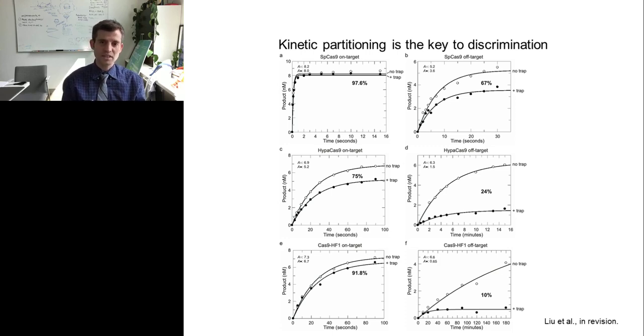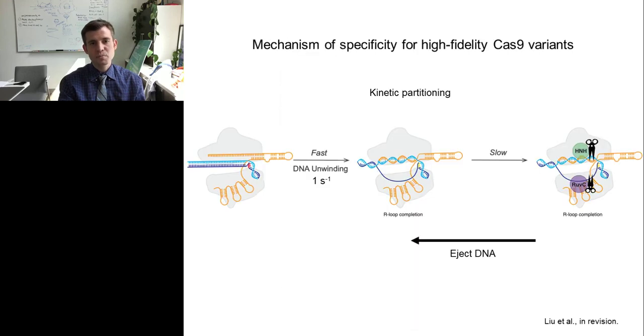A cartoon will help us to better understand this mechanism. In the case of these high-fidelity variants, the DNA unwinding is fast. It's still occurring at about one per second, so then we have the R-loop created. But the irreversible cleavage reaction that occurs when the two strands are actually snipped by both the HNH and RuvC domains, that's happening very slow for these enzymes, which gives the enzyme a chance to reequilibrate and, in fact, eject the DNA. Going all the way back to the DNA being rewound and then removed from the enzymes.